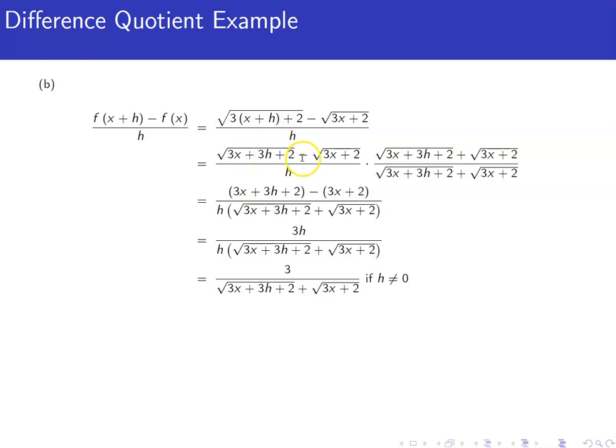We get square root of 3x plus 2 times square root of 3x plus 3h plus 2 here, and the exact same thing here. Those terms will cancel. The last terms, when you foil this, you'll get a minus, and then it'll be just 3x plus 2.